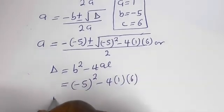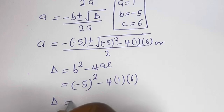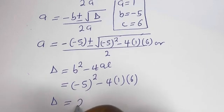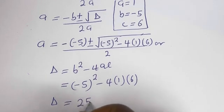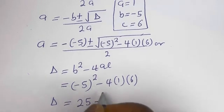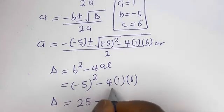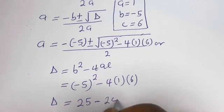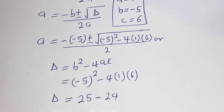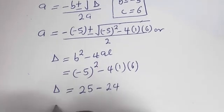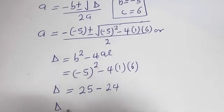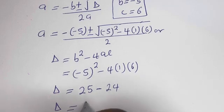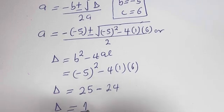So d is equal to 25 minus 4 times 1 times 6, which is 24. Therefore d is equal to 1.